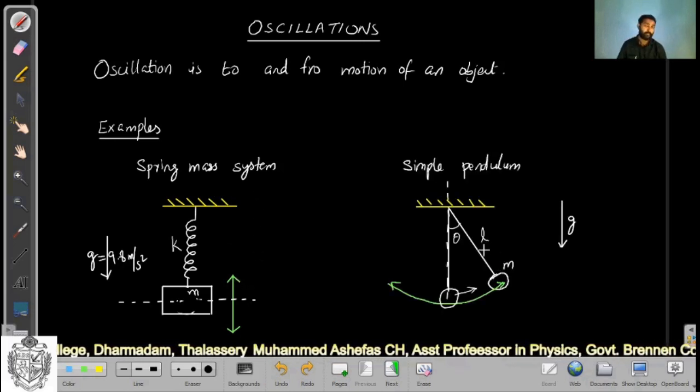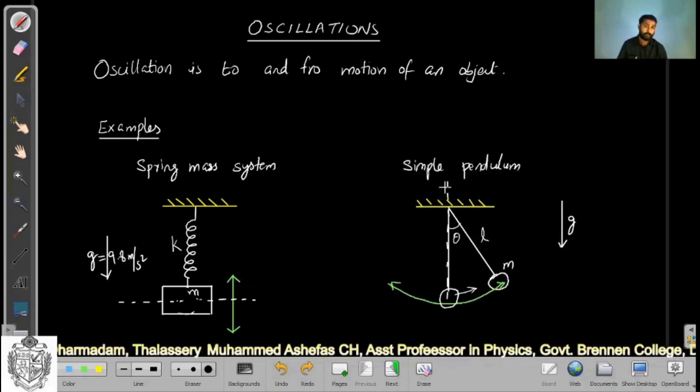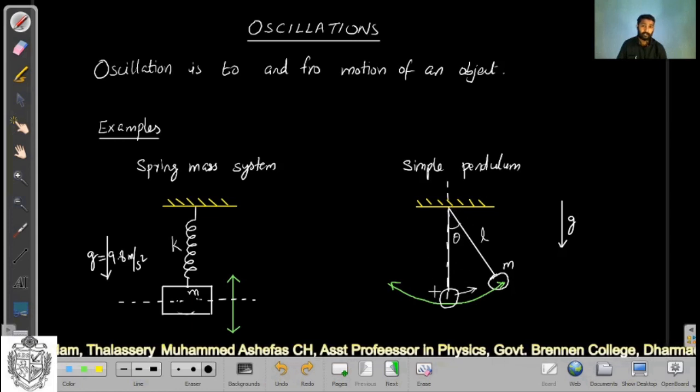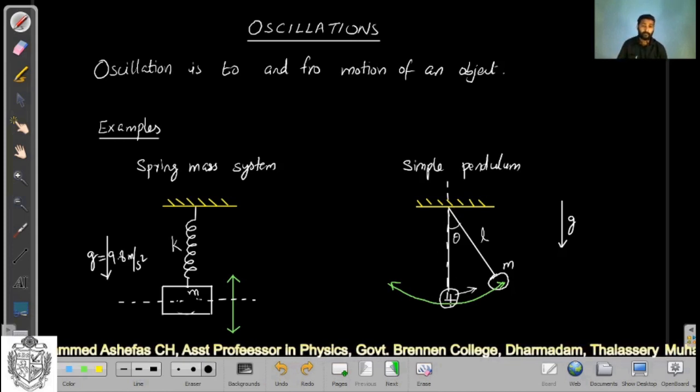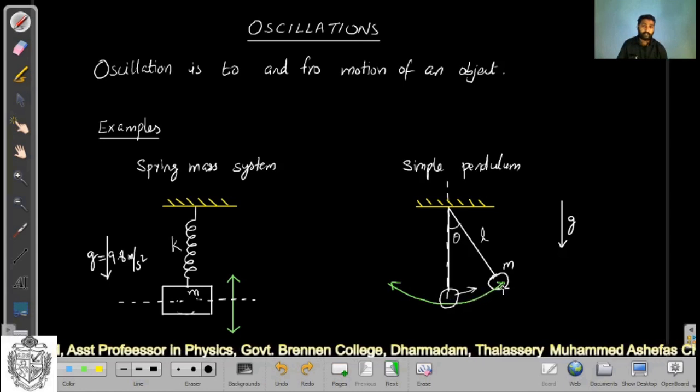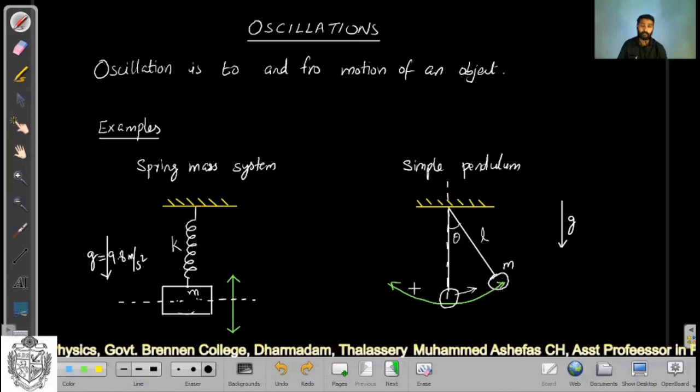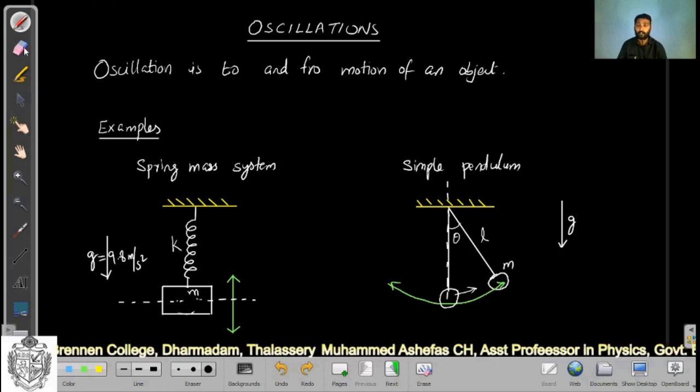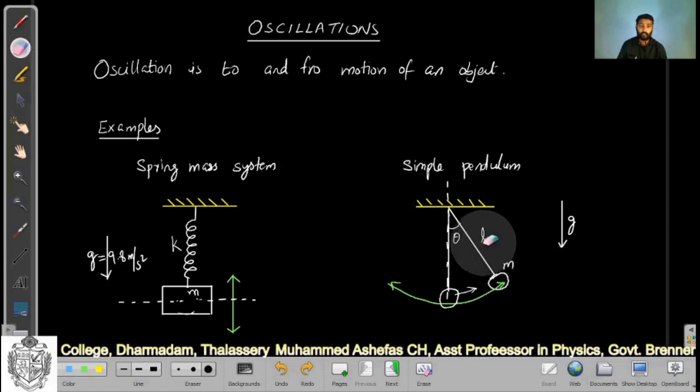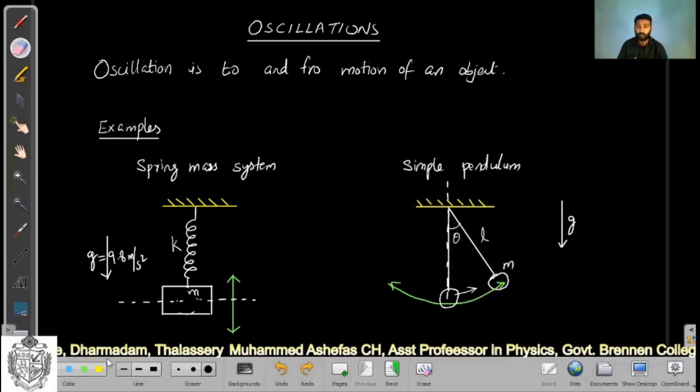The example relevant to us is a simple pendulum. Consider a bob attached to a string and hung on a roof. If you displace this bob to a certain angle, maybe the angle theta, this simple pendulum will start oscillating about its equilibrium position.